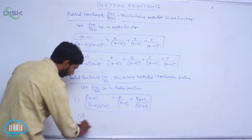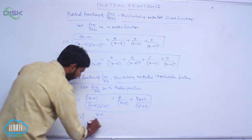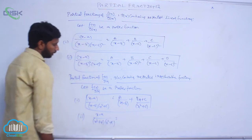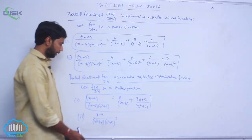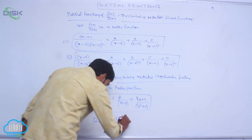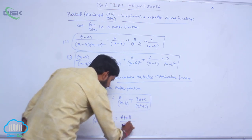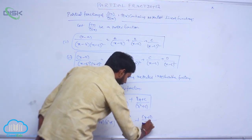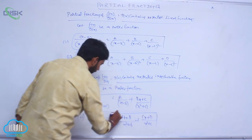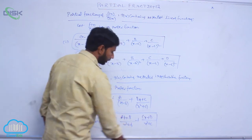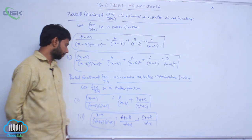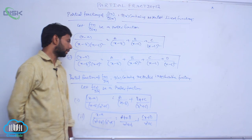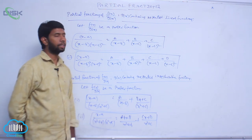The next one is (x minus a) divided by (x squared plus b) times (x squared plus c). Here (x squared + b) is a second degree term containing two constants, so it equals (Ax + B)/(x squared + b) plus (Cx + A)/(x squared + c).